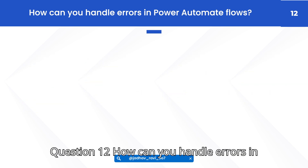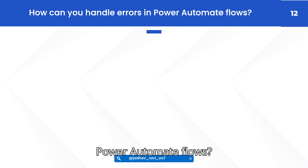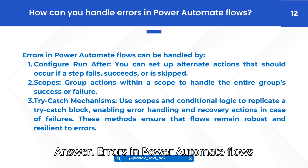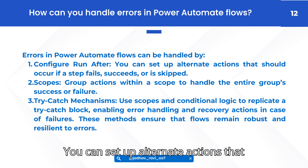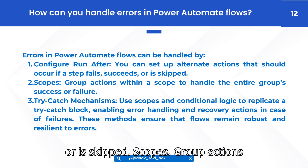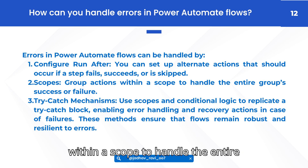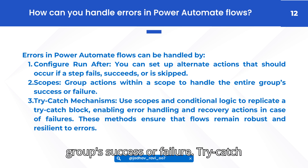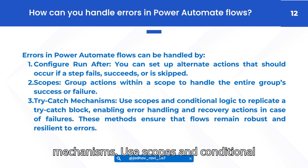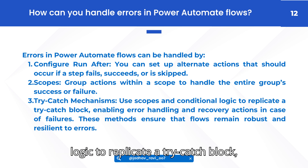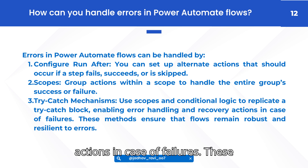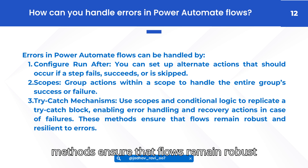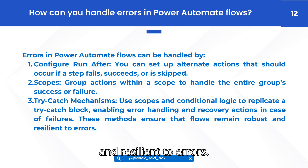Question 12: How can you handle errors in Power Automate flows? Answer: Errors in Power Automate flows can be handled by: Configure run-after — set up alternate actions that should occur if a step fails, succeeds, or is skipped. Scopes — group actions within a scope to handle the entire group's success or failure. Try-catch mechanisms — use scopes and conditional logic to replicate a try-catch block, enabling error handling and recovery actions in case of failures. These methods ensure that flows remain robust and resilient to errors.